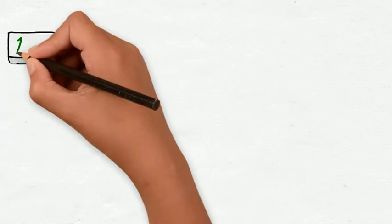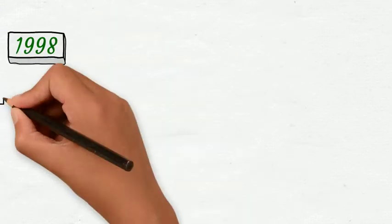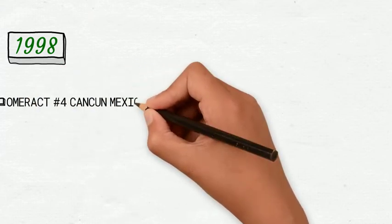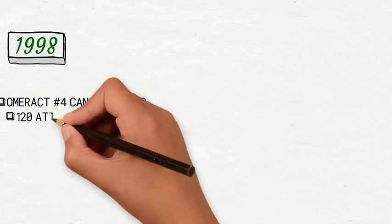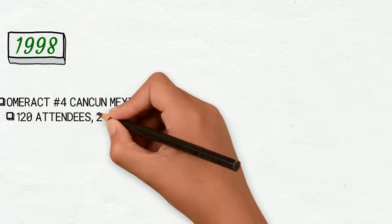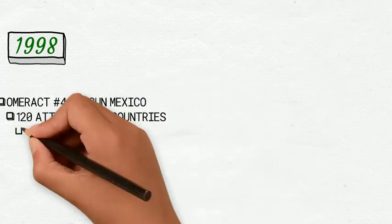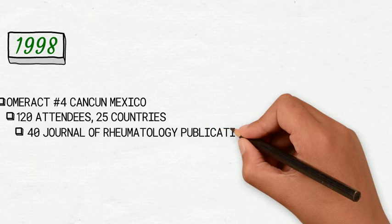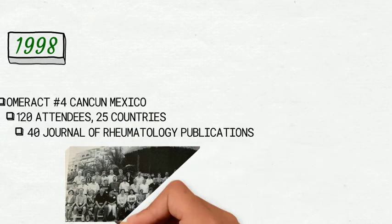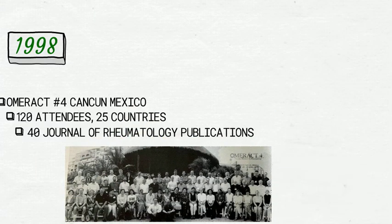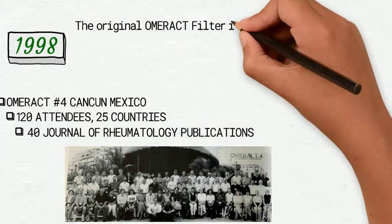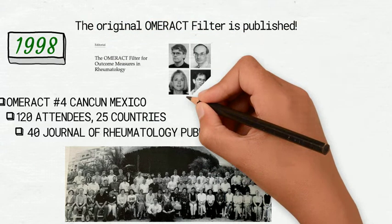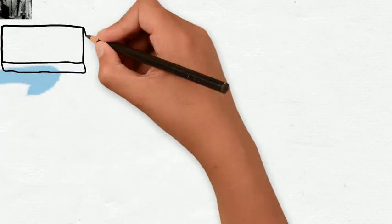OMERACT's fourth conference was held in Cancun, Mexico in 1998 and recommended domains and outcome measures appropriate to longitudinal observational studies, a core set of outcome measures for randomized clinical trials in ankylosing spondylitis, and domains to be assessed in longitudinal observational studies and randomized clinical trials in systemic lupus erythematosus.